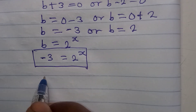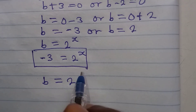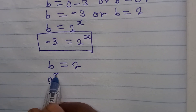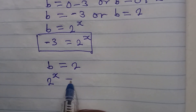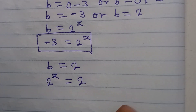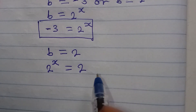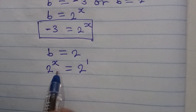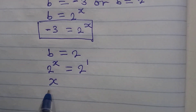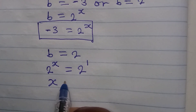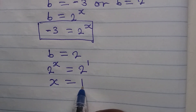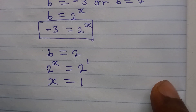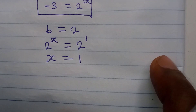On the other side, b equals 2. Since b equals 2 to the power of x, we have 2 to the power of x equals 2, which is 2 to the power of 1. Same base, so the powers must be equal: x equals 1.